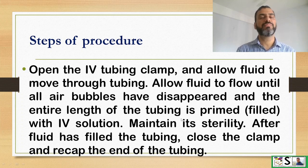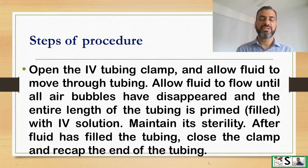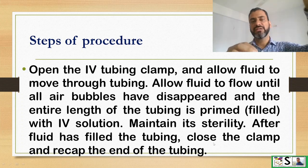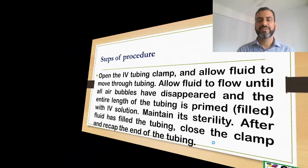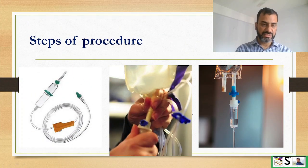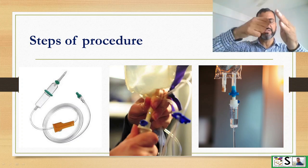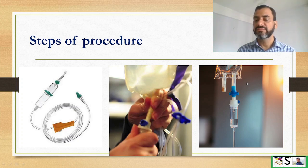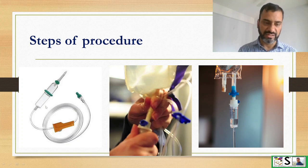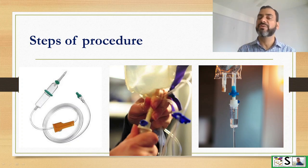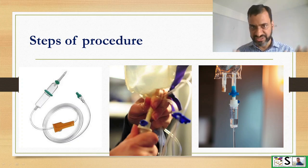During this procedure we should maintain sterility, especially at the endings of the tubings. After the fluid is filled in the tube, close the clamp, recap the end of the tube, and hang it on the pole. Insert the spike portion by twisting movement into the bottle, half-fill the chamber, prime the IV drip set, then recap and hang. In this way we have prepared our IV drip set and fluid.